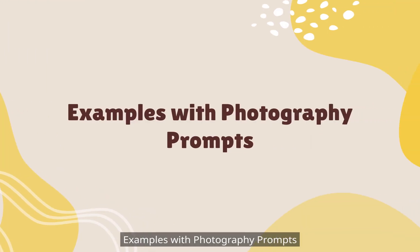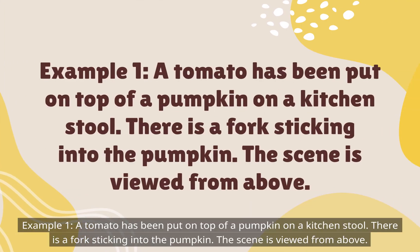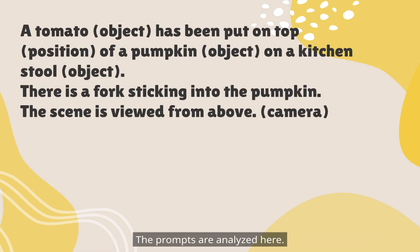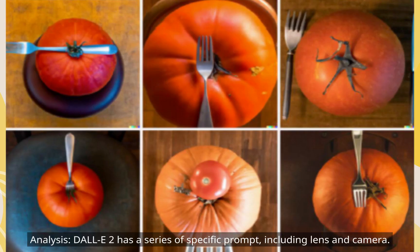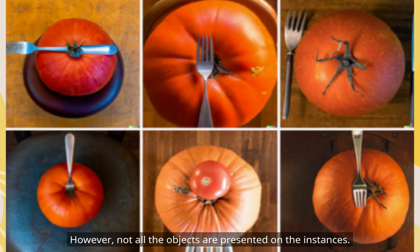Photography prompt Example 1: A tomato has been put on top of a pumpkin on a kitchen stool. There is a fork sticking into the pumpkin. The scene is viewed from above. DALL-E 2 responds to specific photography prompts including lens and camera specifications. In this example, it got the viewpoint specification consistently. However, not all the objects are present in all instances.